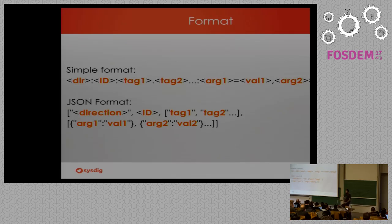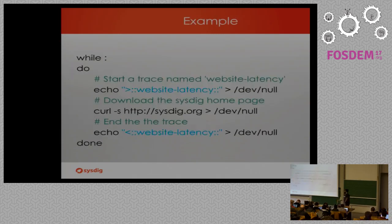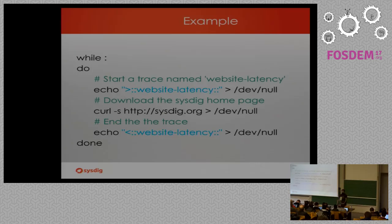When we write to /dev/null we can do it in two different ways. We can use a very simple format — not very complex — where we have a direction, an ID to identify the span, some tagging, and arguments, in case we want function entry and exit arguments. We can also use JSON format, but the simple one is easier. I'm going to show you an example. When I was deciding what example to use for SysDig Tracers, I thought: this is like APM for bash. So let's call it APM for sysadmins.